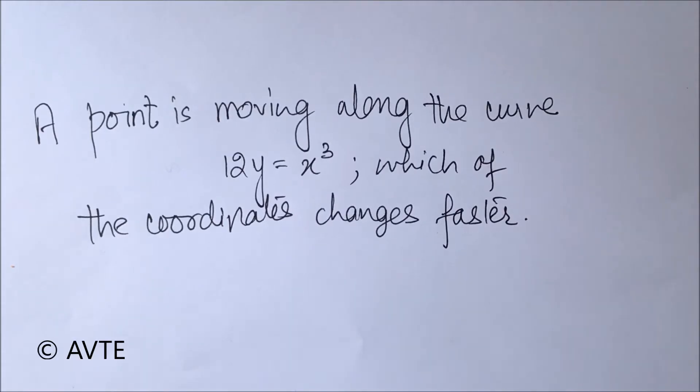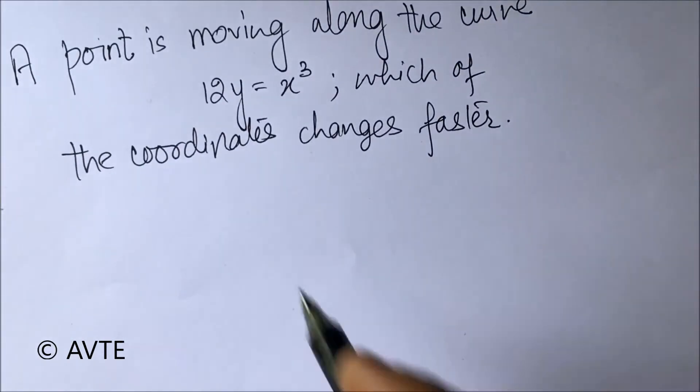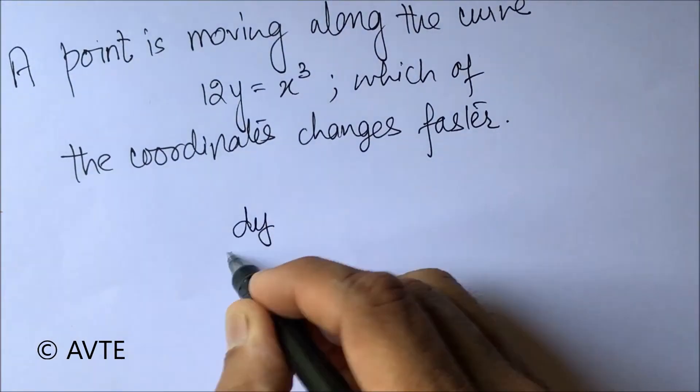A point is moving along the curve 12y equals x cubed. Because the degree is 3, this is also known as a cubical parabola. The question asks which of the coordinates changes faster.